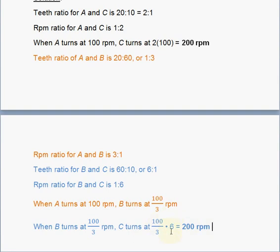Now how do we get, why did we multiply by 6? Well, we multiplied by 6 because of this ratio. So if 100 over 3 represents the 1, 6 is 6 times 1. That's why we have to multiply the 100 over 3 by 6.